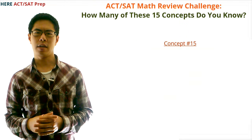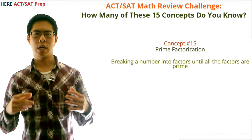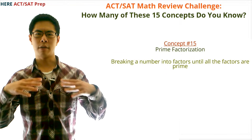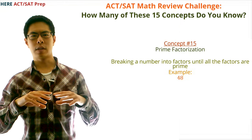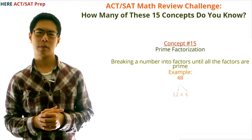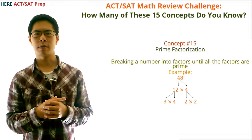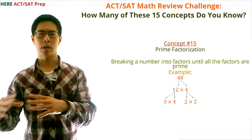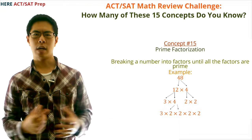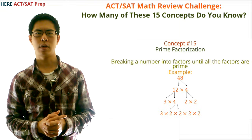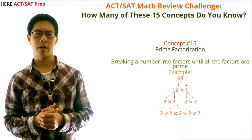Concept number fifteen: prime factorization. Prime factorization is when you keep breaking a number into factors until all the factors are prime. For example, the prime factorization of 48: 48 = 12 × 4; 12 = 3 × 4; each 4 = 2 × 2. So the prime factorization of 48 is 3 × 2 × 2 × 2 × 2.